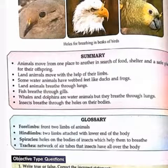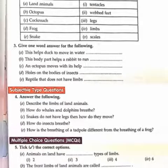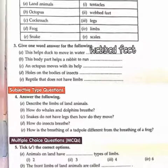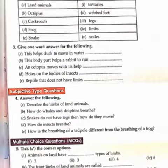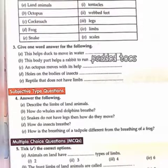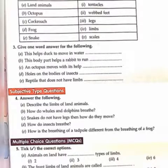Now moving on to the exercises. The glossary part is your word meanings. Next is give one word answer for the following. This helps a duck to move in water — the correct answer is webbed feet. This body part helps a rabbit to run — padded toes. And octopus moves with the help of its tentacles.